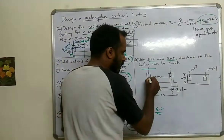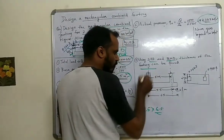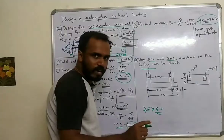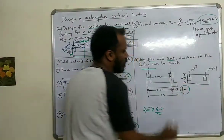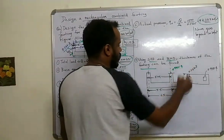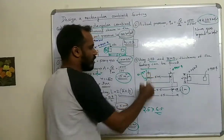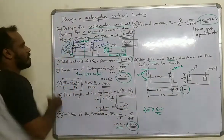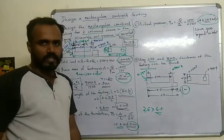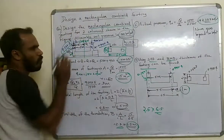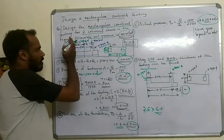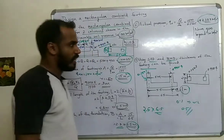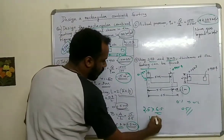Looking at the figure, the center-to-center column distance is 5.5 m. The exterior column size is 0.3 × 0.3 and the interior column size is 0.4 × 0.4. The projection from the exterior column edge to the footing edge corresponds to b1 divided by 2.